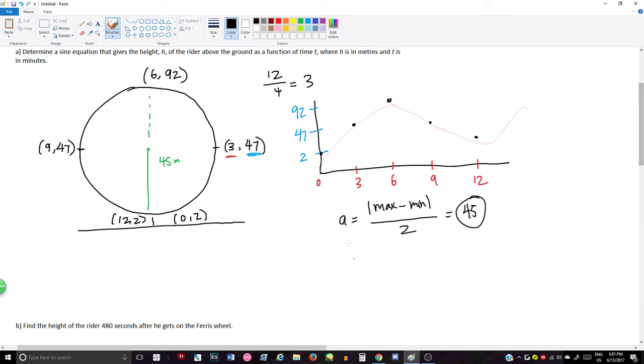After our amplitude, we have the period, which for sine is 2 pi over b. And b would be our 12, so we would have 2 pi over 12, which is just pi over 6, simplified. Let's circle that.